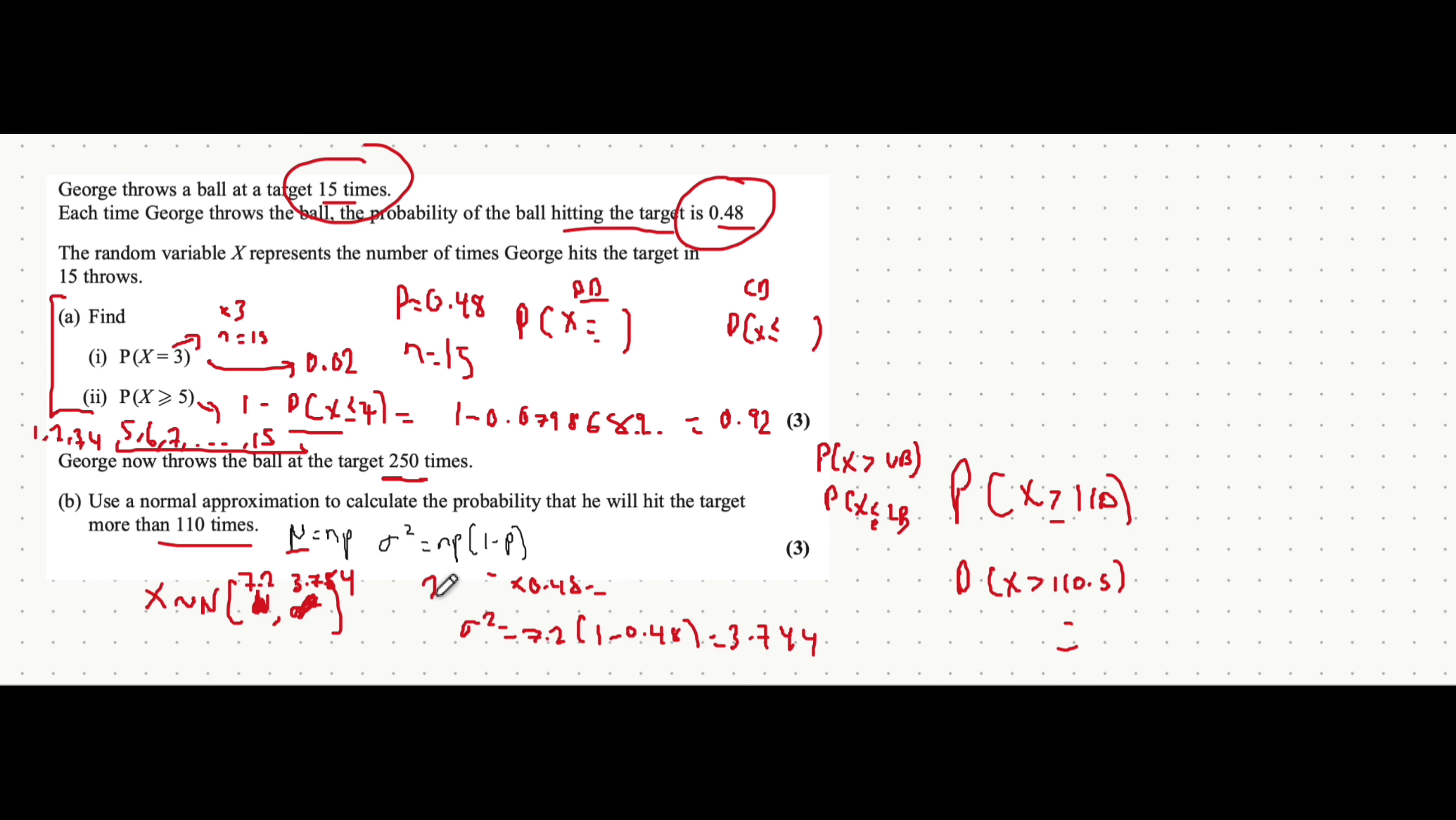So, if we instead did n of 250 times 0.48, I didn't have time to do these questions beforehand, so a little bit of a silly mistake there. But, 120 multiplied by 0.52, that would give 62.4. So, not too many things to change.